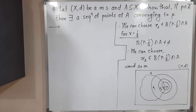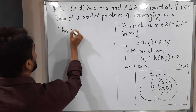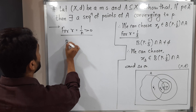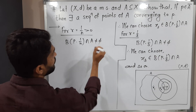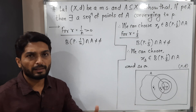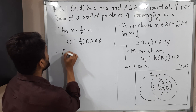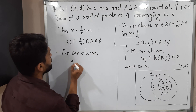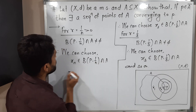Let us write a general statement. Therefore, for r equal to 1/n, which is greater than 0, we can write B(P, 1/n) intersection A is not equal to empty. This covers r equal to 1/4, 1/5, 1/6 — I am writing the general statement where the intersection is non-empty. Therefore, we can choose some point Xn from B(P, 1/n) intersection A.